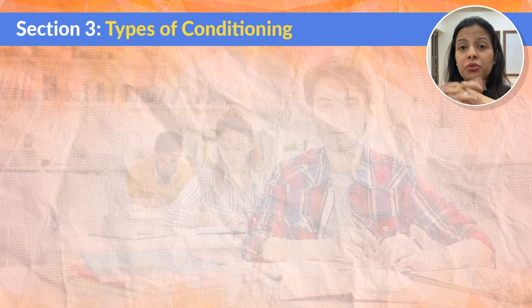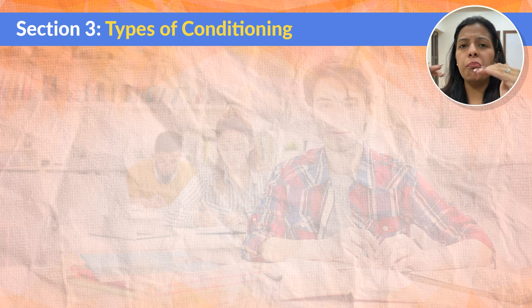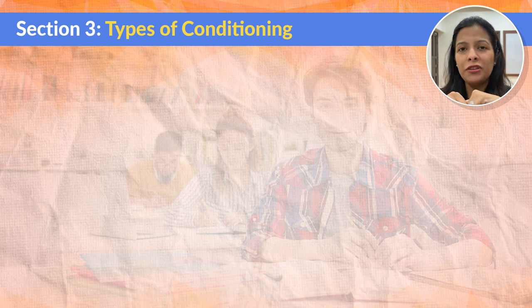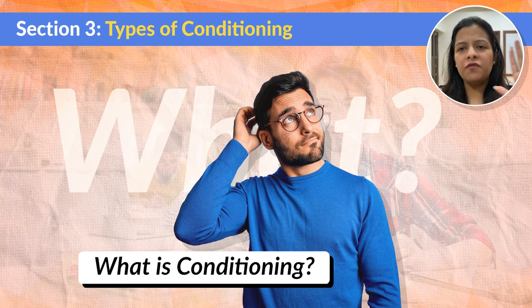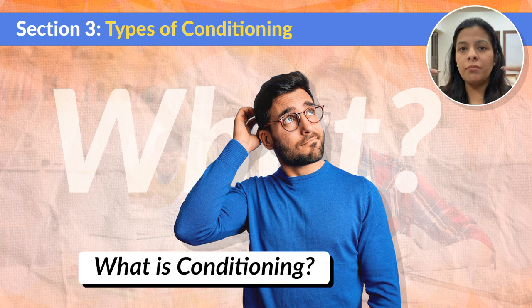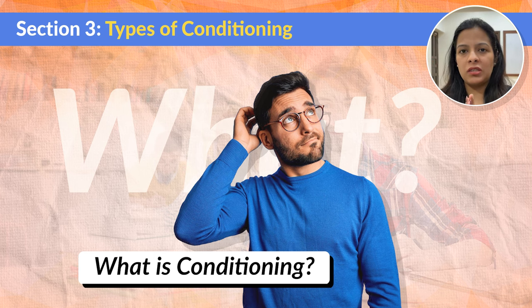Now that we have understood some important terms related to behavioralism, it is time to look at the most important concept given by Behavioral Development Theory — that is the concept of Conditioning. We are going to look at different types of conditioning. In very simple language, conditioning refers to a process by which our behavior is shaped by learning through experience. We experience something and through it, we remember and learn — that is what conditioning is all about.